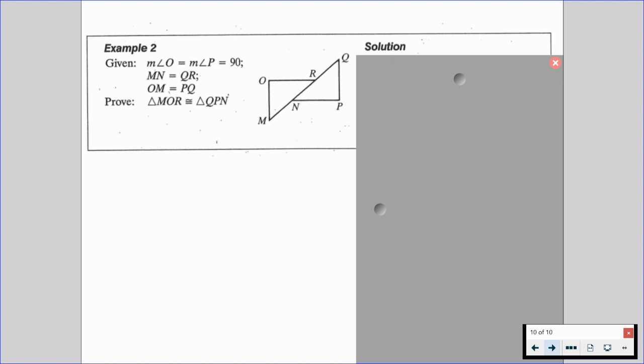So example number 2 for part 2, we're given that the measure of angle O is equal to the measure of angle P, which are both 90 degrees. We're given that the length of MN is equal to the length of QR. We're given the length of OM is equal to the length of PQ, and we want to prove that triangle MOR is congruent to triangle QPN. So whenever we are given anything, again, we always, always, always want to mark up our diagram. So we know that angle O is a 90-degree angle, so is angle P. We know that segment MN is congruent to segment QR. We know that OM is going to be congruent to PQ.